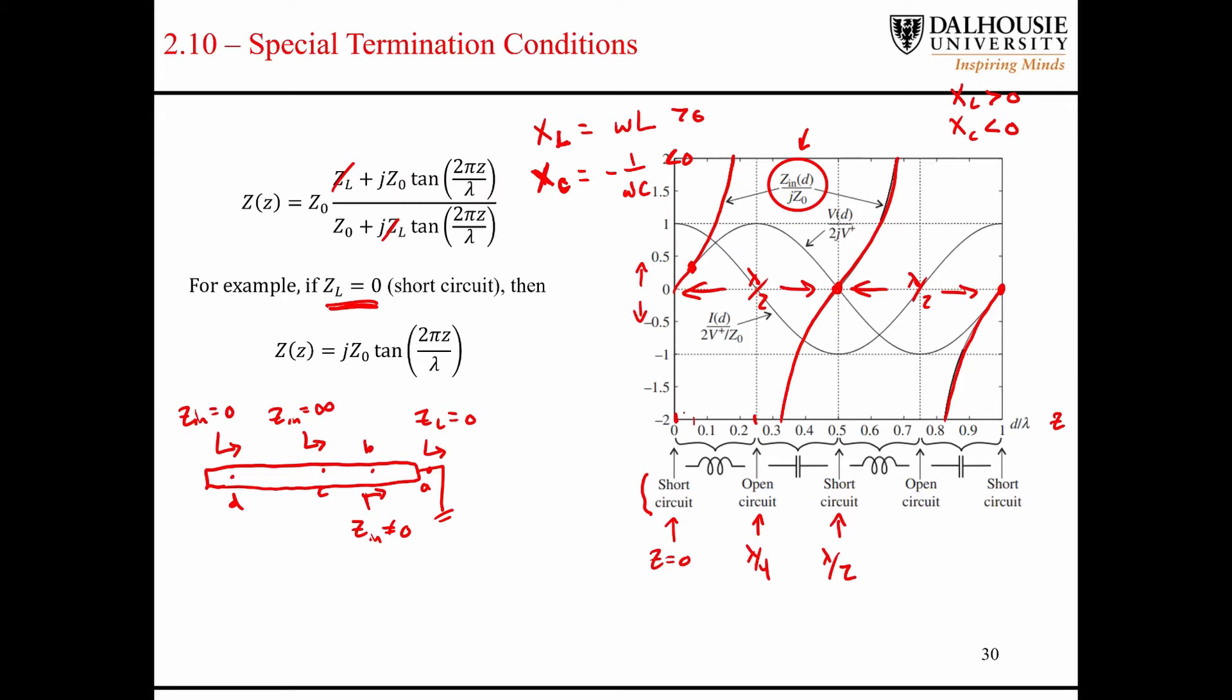You can see that from zero to pi over four, we look inductive and then from pi over four to pi over two, we look capacitive, which is incredible. So if we measure at point A, we see the short circuit. If we measure at point B, and we're assuming point B is somewhere in this range here, we actually see an inductor when we look in.